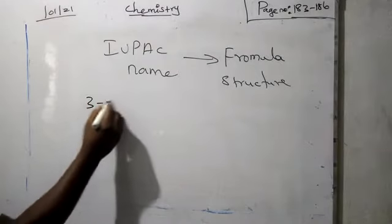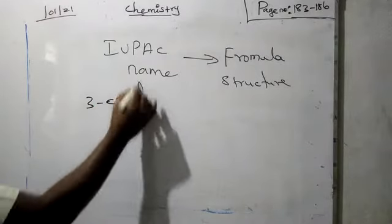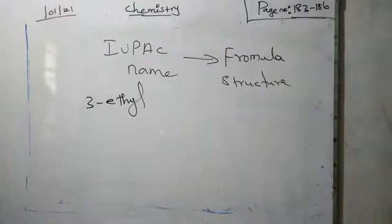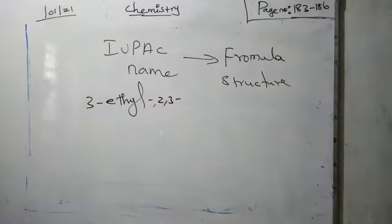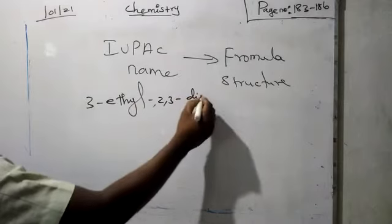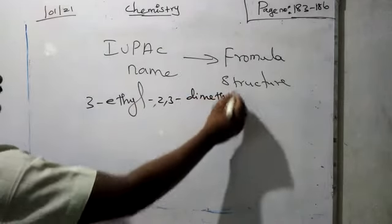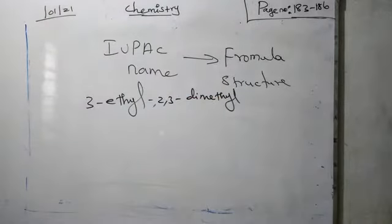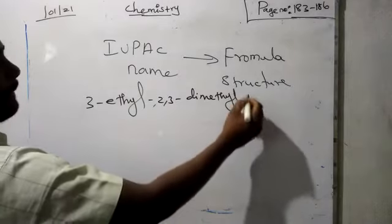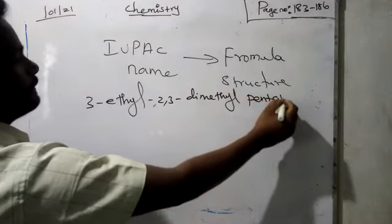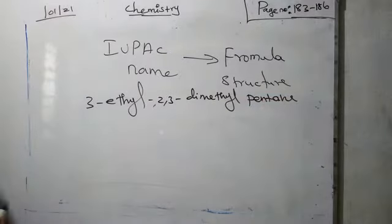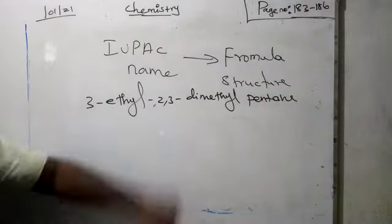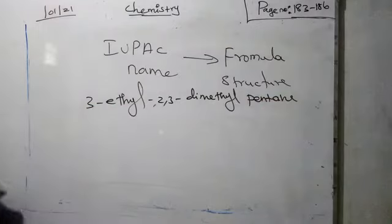We have been given 3-ethyl-2,3-dimethyl-pentane. We have to bring the structure of this compound, 3-ethyl-2,3-dimethyl-pentane.